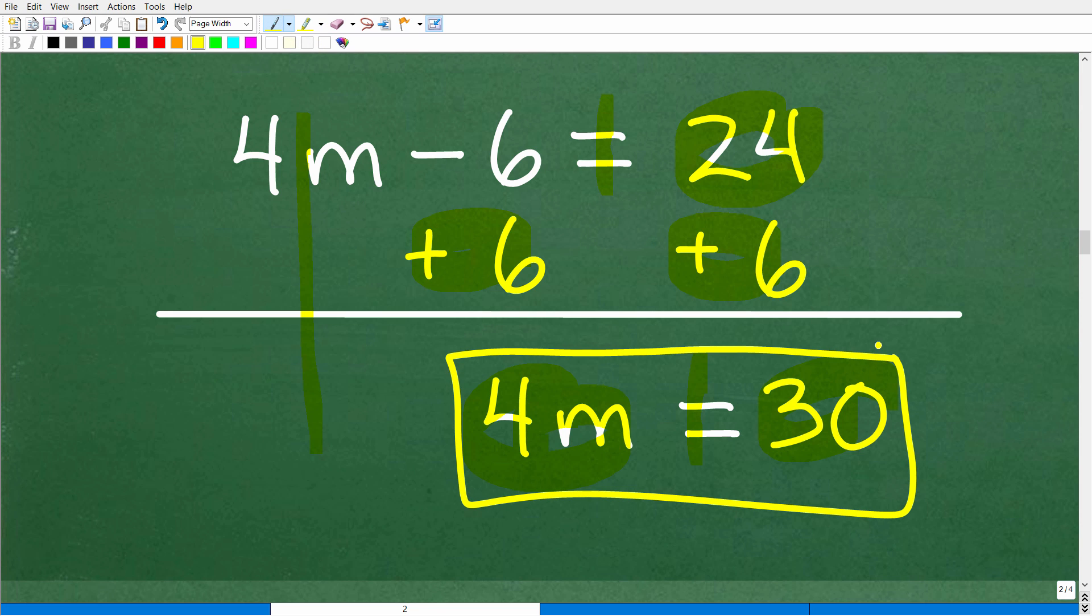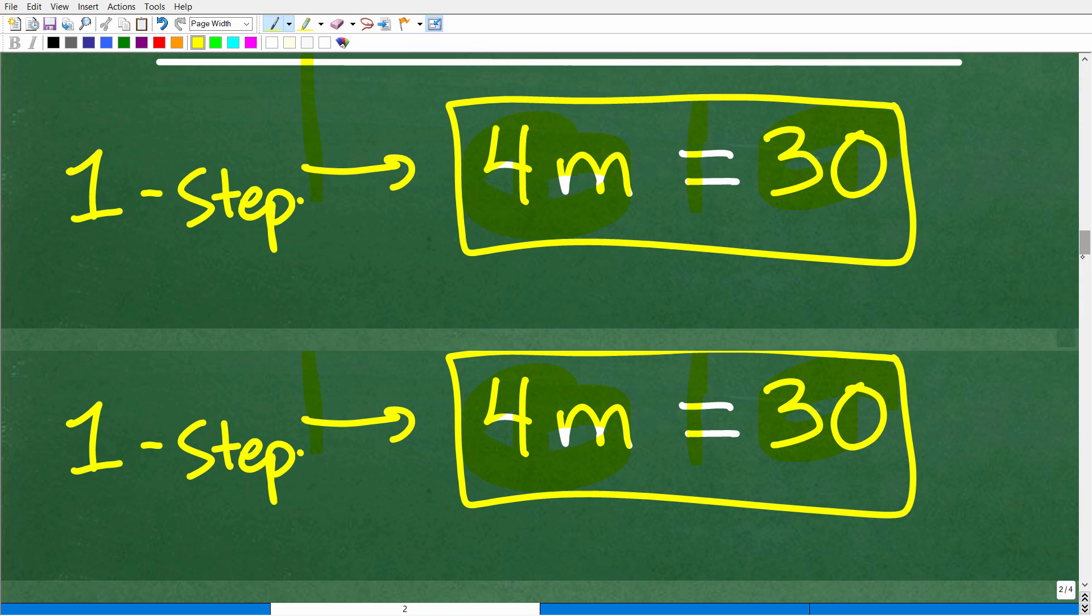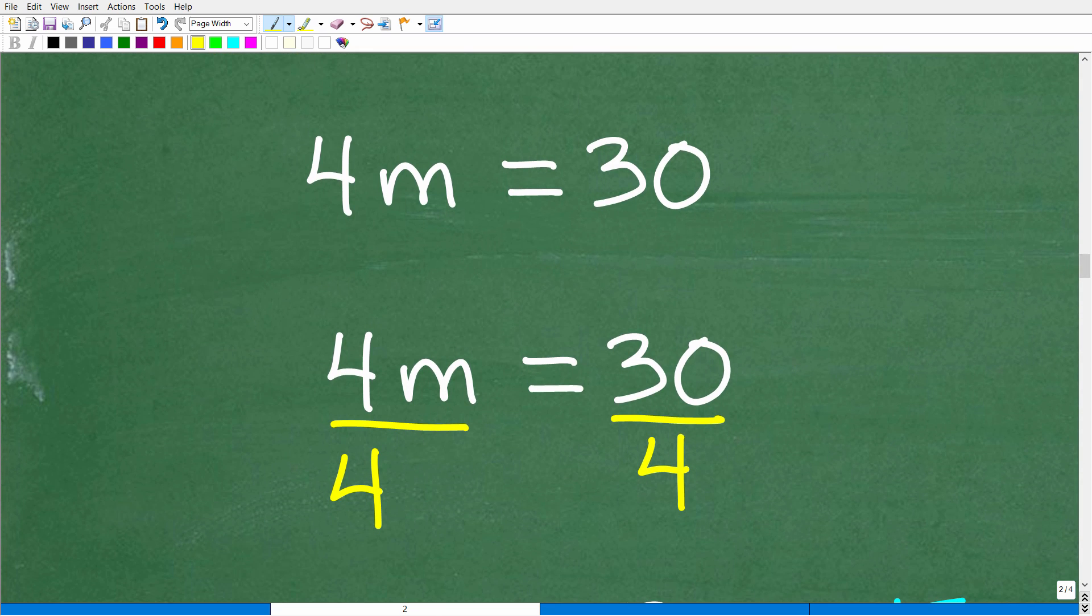All right. So at this point, what we have is we call a one step linear equation. One step. Now, why would it be called one step? Well, there's precisely one step to solve this equation. So let's go ahead and take that one step and let's just kind of make an observation here. So this is four times M. The objective to solve this equation is to get M by itself. This is a multiplication. So what is the opposite operation of multiplication? Well, hopefully you said division and the opposite operation of division is multiplication, for addition it's subtraction, for subtraction it's addition.